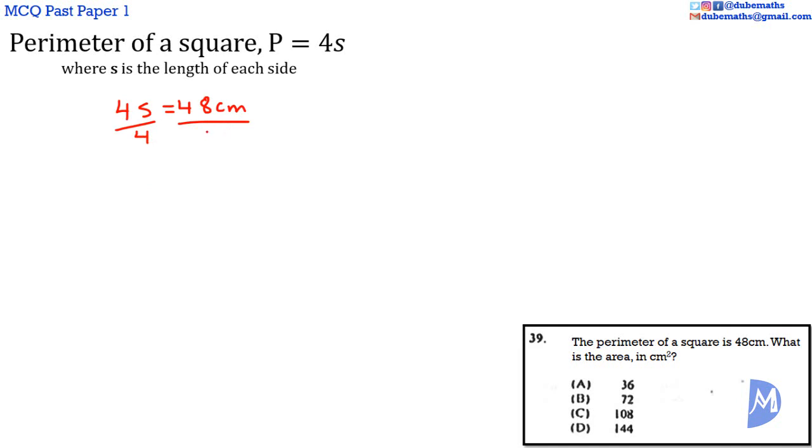Question 39. The perimeter of a square equals 4s, where s is the length of each side. We are given that the perimeter is 48 cm. This means 4s equals 48 cm. Dividing by 4, we get that s, or each side, equals 12 cm.